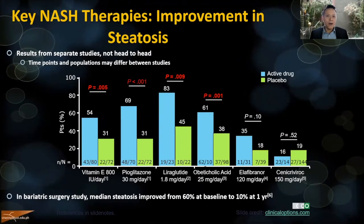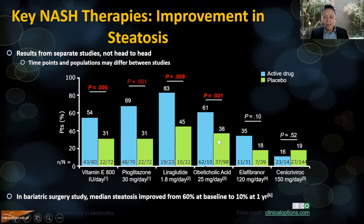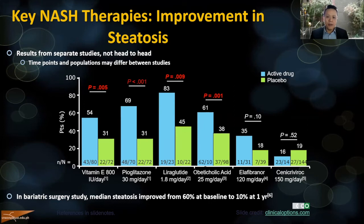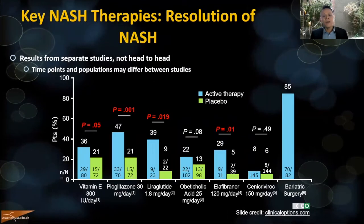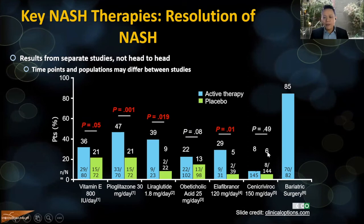What about results of pharmacotherapy for fatty liver disease? Pioglitazone and vitamin E show very good results in terms of steatosis improvement, as does liraglutide and obeticholic acid. The problem with liraglutide is that it is injectable, and in the phase three trial there were significant GI side effects — a lot of nausea and vomiting. Lanifibranor and the other drugs with negative phase three results I will not discuss further.